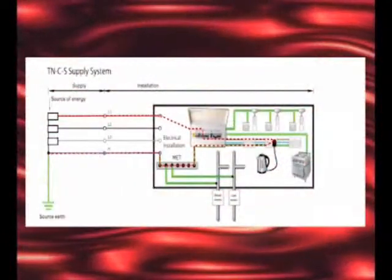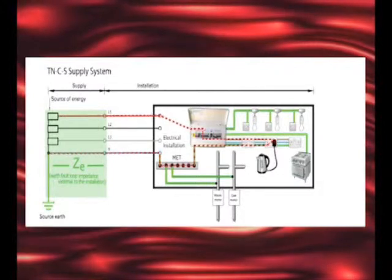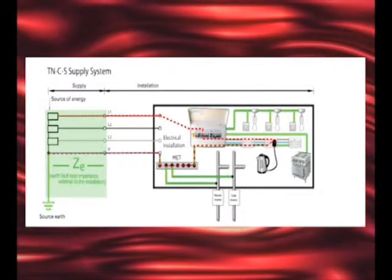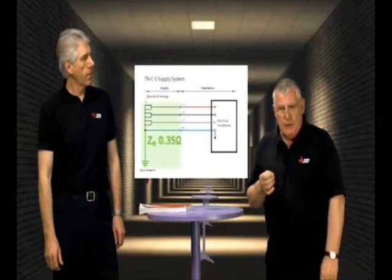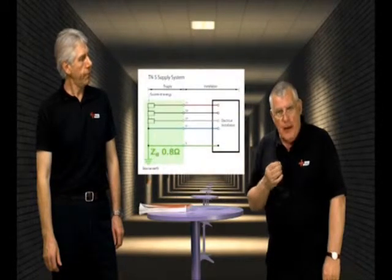The portion of the Earth fault loop path external to the installation is known as ZE. Electricity distributors declare values for ZE on a TN-CS system to be 0.35 of an ohm, and on a TN-S system to be 0.8 of an ohm. So the principle of automatic disconnection of supply is that using Ohm's law, the low impedance path to Earth means that Earth fault currents should be of high magnitude, making it easier for the circuit protective device to distinguish against overloads and disconnect the supply quickly.